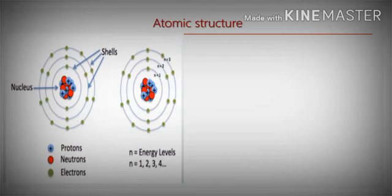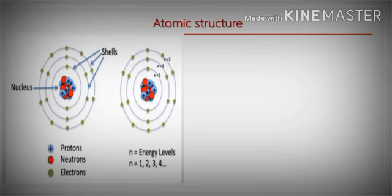The charge of a proton is positive, and the neutron has no charge. Because of the protons, the nucleus gets a positive charge. The electrons have negative charge and are revolving around the nucleus in different shells. These shells are called energy levels or energy shells, and are denoted as N — that is, 1, 2, 3, 4.